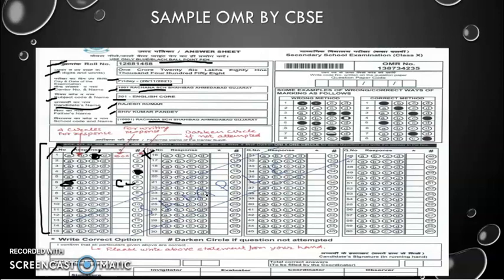I hope you understood. For the last column, you will circle that question number which you have left unattempted.